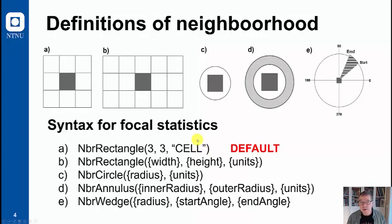First we need to define neighborhood. GIS is very flexible here. The default which is very often used is a three by three window. A syntax for this uses an operator called neighborhood rectangle where the cell dimensions is three by three and the unit is set to cell. This is also called the first order neighborhood, the eighth neighborhood of a pixel.